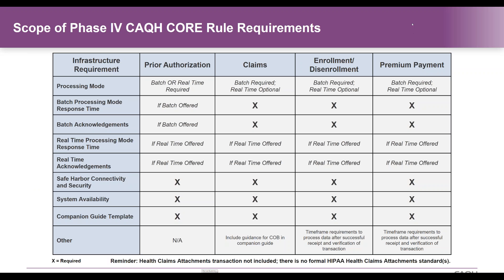The Phase 4 Operating Rule Set includes requirements for four different transactions: the 278 prior authorization, the claim transaction in all three flavors — 837 institutional, professional, and dental. We also have requirements for the enrollment/disenrollment 834 transaction, as well as the 820 premium payment transaction. So these four transactions are all part of the Phase 4 Rule Set.